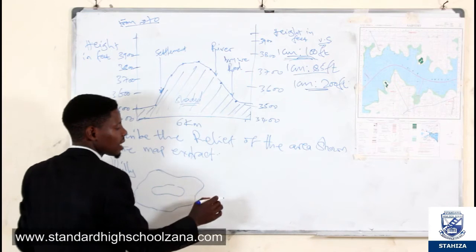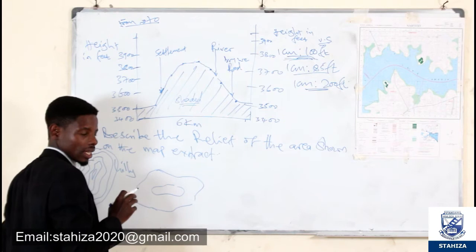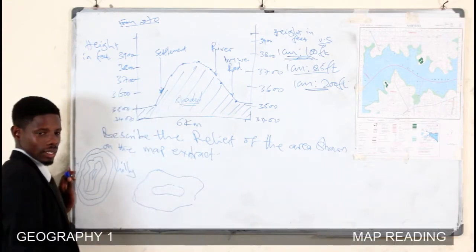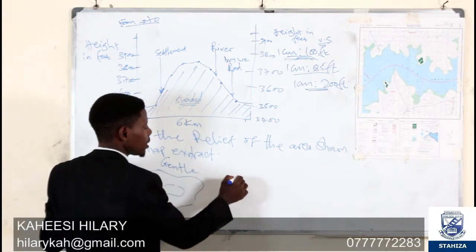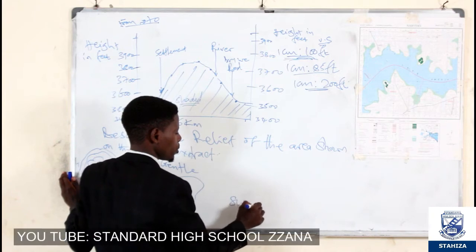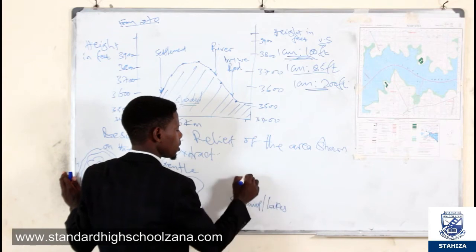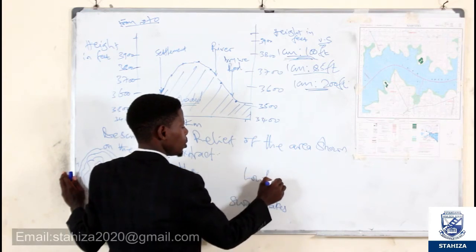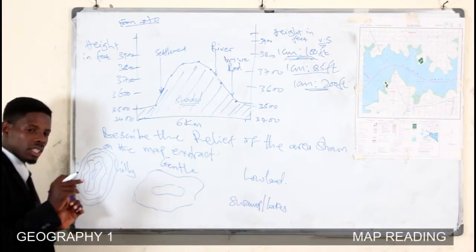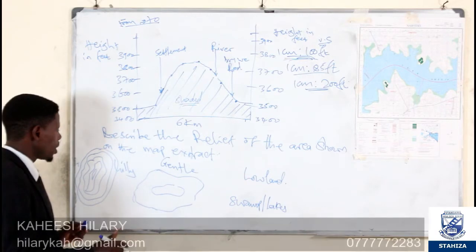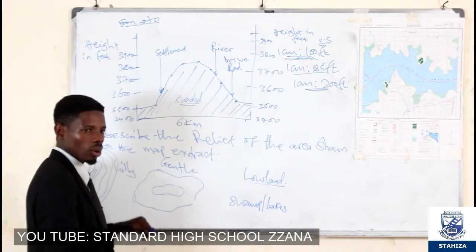Where contours are scattered and the spacing is wide, those areas can be described as gentle. And where we find a lake, swamp areas, or bog areas with completely no contours, those can be called lowland. But remember this is map reading — if you say lowland, you must say where you have seen the lowland on the map extract.